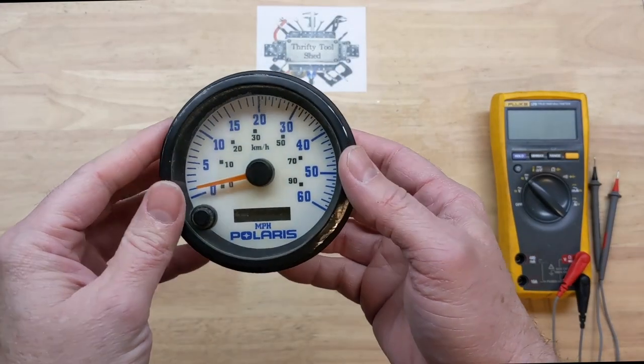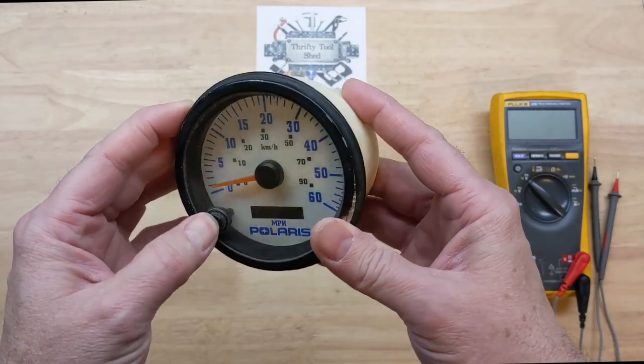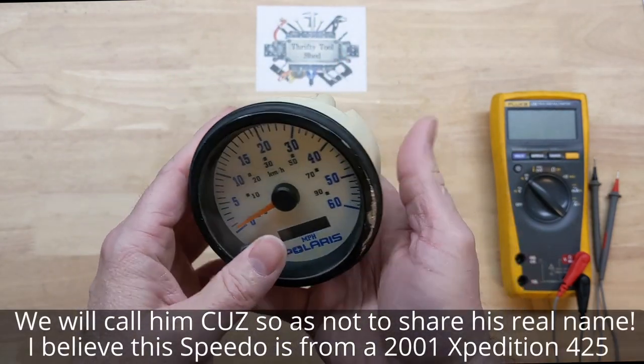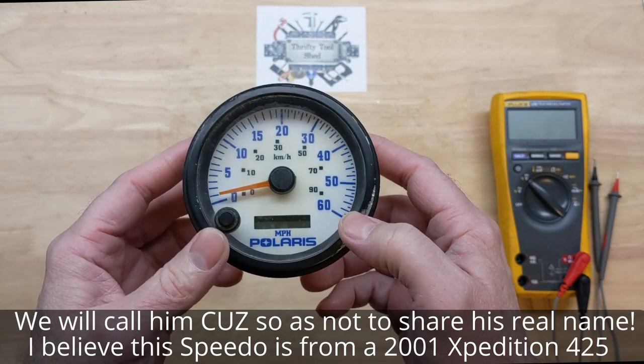Hey guys, today I just thought we'd take a look at this Polaris speedometer. It belongs to a friend of mine at work and it's not working at all. It's making it where you can't go into the four wheel drive mode.